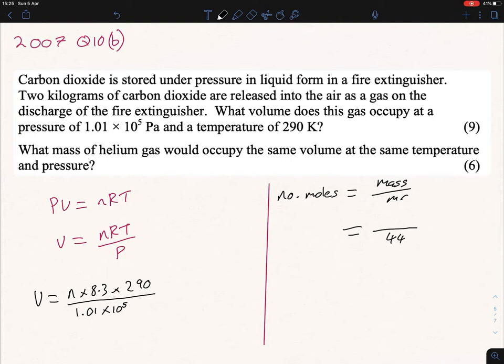Now this is the hard part in terms of the mass. A lot of students did 2 divided by 44, but the mass must be in grams. That's really important. The mass we were given was in kilograms so we had to convert that to grams. 2 kilograms equals 2000 grams.